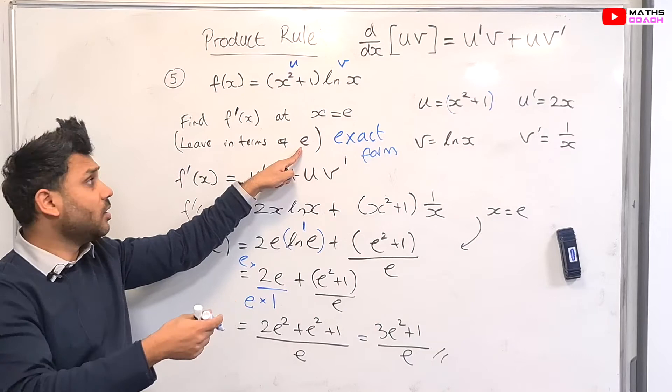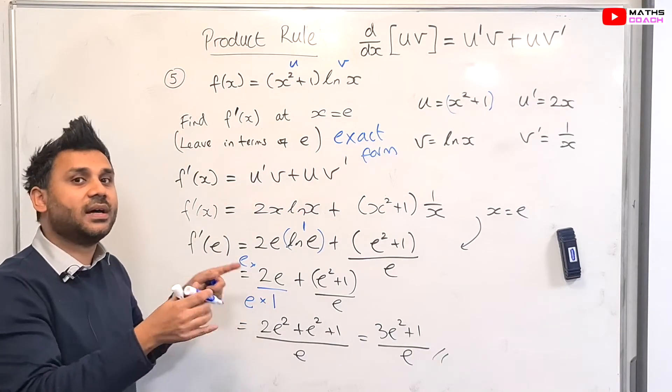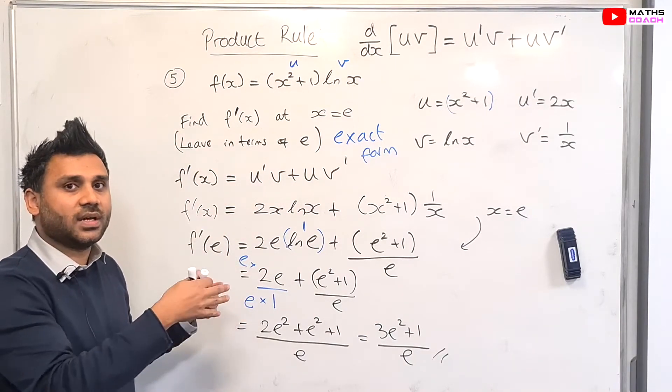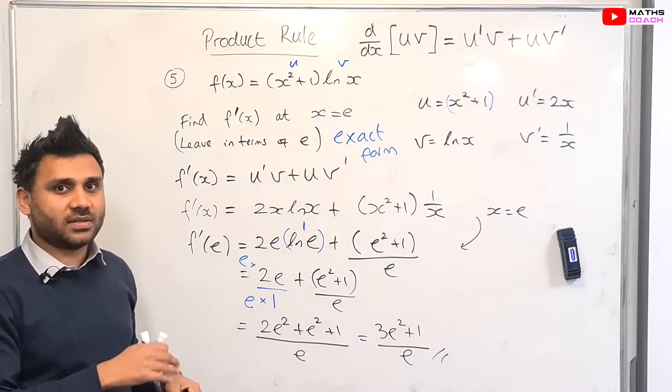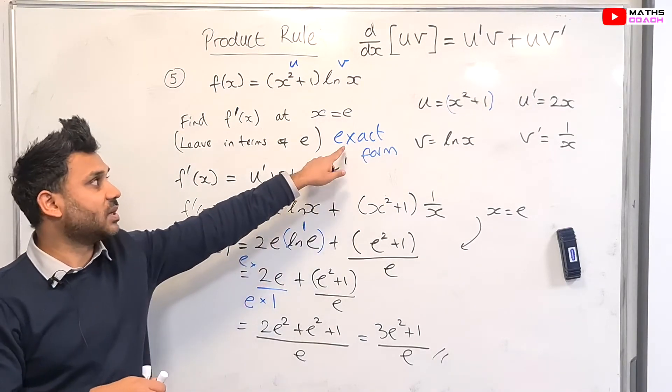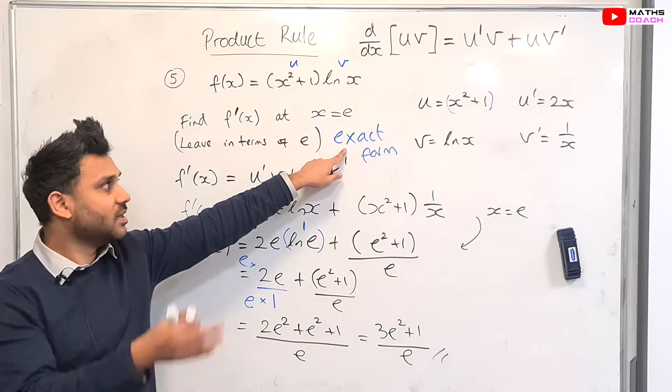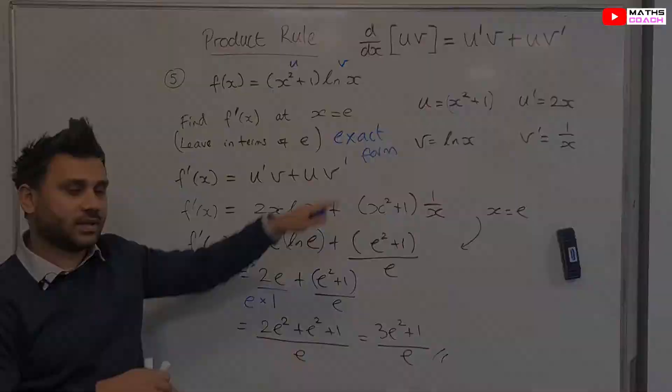All that means basically is if you have e's in your expression, leave the e's there. Or if you have pi's in your expression or square roots of a number, leave them in that form or in terms of pi. Do not go into decimals. That's where you will lose marks because the answer cannot be put back into an exact form.